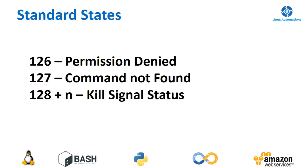The next one is 127, which is command not found. If you are running a command that doesn't exist in directories set in the PATH variable, you receive a command not found error, and usually in such cases we see 127 as the exit status.